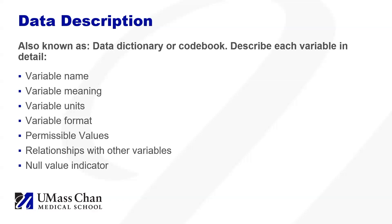Your data description, also known as data dictionary or codebook, is one of the most important parts of the README file. It contains key information for each of the variables in your data, including variable name, variable meaning, variable units, variable format, permissible values, relationships with other variables, and null value indicator. You should also note any known issues with the data, such as systematic errors or missing values, as well as anything else someone needs to know to understand the data. This information can be contained in the README file template or in a separate file. If in a separate file, indicate where this information is kept and ensure it is in a plain text or CSV format.